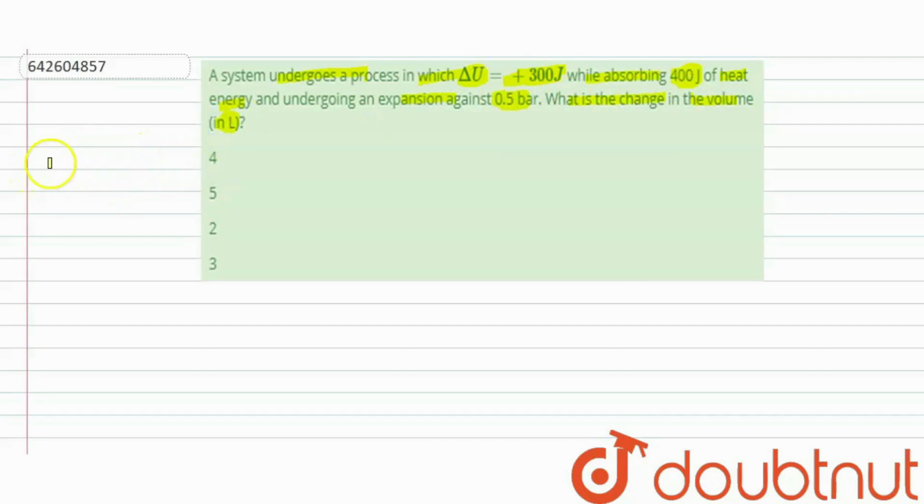So here we can use the first law of thermodynamics. Why? Because we are already given delta U and the value of Q. Both values are given and pressure is also given. We know that the work done is equal to minus P external into delta V.